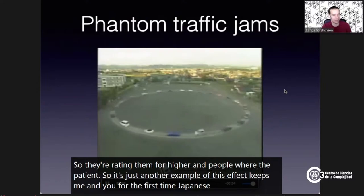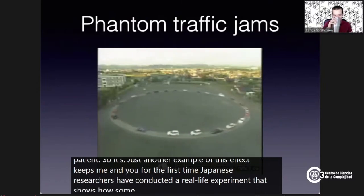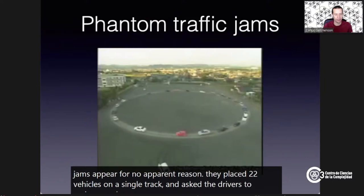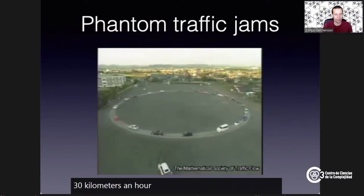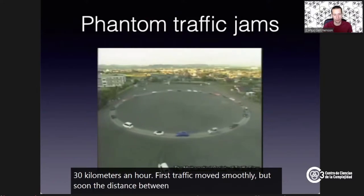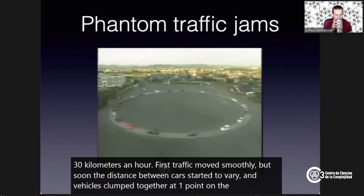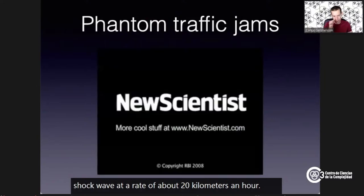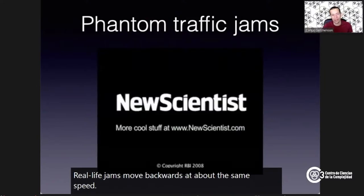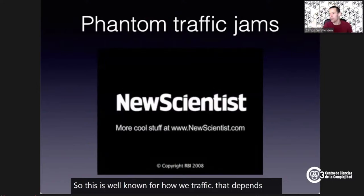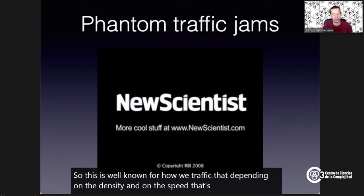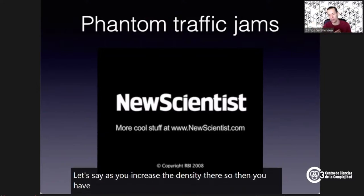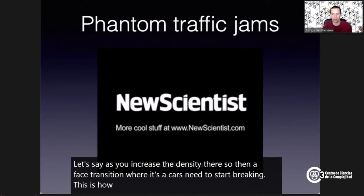Japanese researchers conducted a real-life experiment showing how traffic jams appear for no apparent reason. They placed 22 vehicles on a single track and asked drivers to cruise at 30 km/h. At first traffic moved smoothly, but soon vehicles clumped together, and jams spread backwards like a shockwave at about 20 km/h — matching real-life jams. For highway traffic, depending on density and speed, increasing density causes a phase transition where cars start braking, analogous to the transition from laminar to turbulent flow.